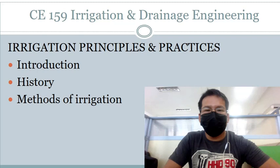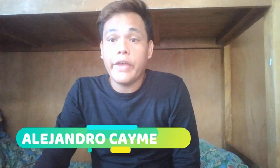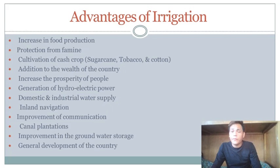Thank you, King James Lamoste, for that presentation. Now let's look at the advantages and disadvantages of irrigation with Mr. Alejandro. The first advantage is the increase in food production. Large-scale irrigation projects are often unsustainable, but a variety of small-scale affordable techniques can increase food production. Examples include water harvesting — collecting runoff and using it to irrigate crops, pastures, and trees — which can significantly improve both yields and the reliability of agricultural production.